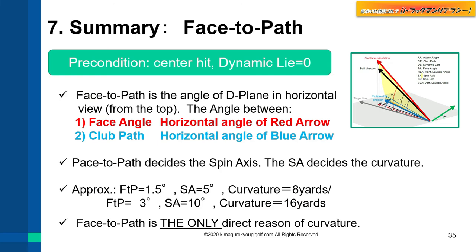Summary: face-to-path is the angle of the D-plane in horizontal view from the top. It is the angle between the face angle — the horizontal angle of the red arrow — and the club path — the horizontal angle of the blue arrow. Face-to-path decides spin axis, and spin axis decides curvature.